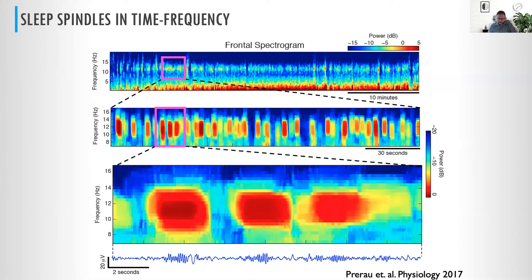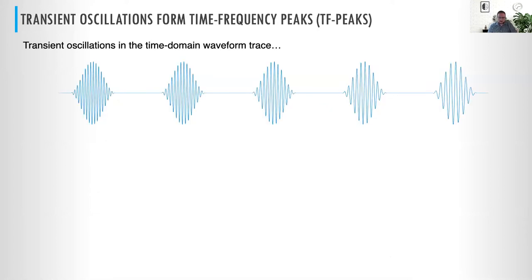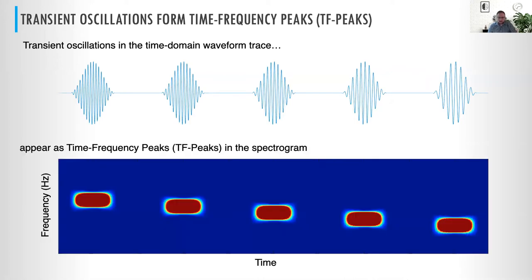There's a principal mathematical reason behind this: any transient oscillation — a short burst of oscillatory power in the time domain — will by definition appear as a time-frequency peak in the spectrogram. Moving forward, we're just going to call these TF peaks. These are going to come up a lot more.